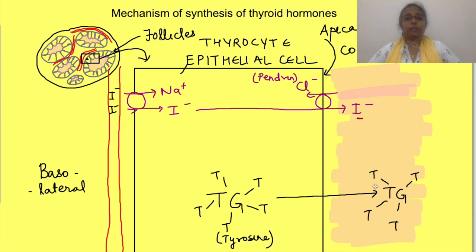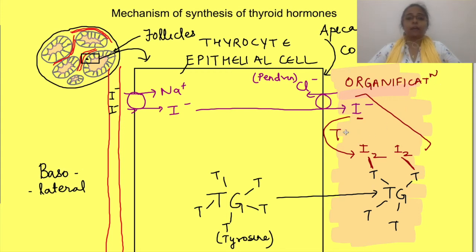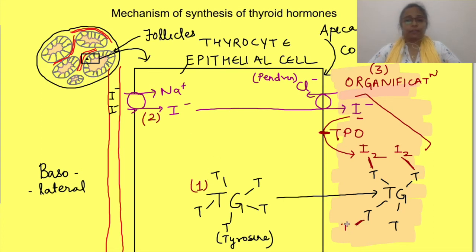However, the iodide cannot react with the tyrosine residues directly — it must first be oxidized to iodine. This process of oxidation of iodide to iodine and iodination of the tyrosine residues of thyroglobulin is known as organification. This occurs in the presence of the enzyme thyroid peroxidase, present on the apical membrane of thyrocytes. Many tyrosine residues of thyroglobulin are iodinated either at a single site, forming monoiodotyrosine (MIT), or at two sites, forming diiodotyrosine (DIT).